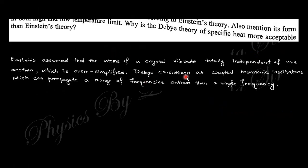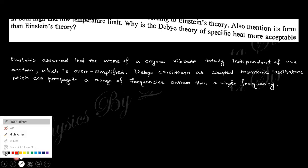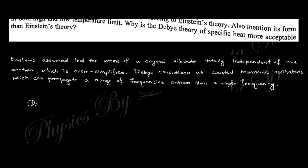Experimental and theoretical Einstein values are not matched at lower temperature but matched at higher temperature. This is not matched because the crystal vibrates totally independently of one another, which is oversimplified. Debye considered the coupled harmonic oscillator that can propagate with more than a single frequency. Another important point is that Debye takes the velocity in two dimensions: longitudinal and transverse. But Einstein takes only one side velocity, that is, the longitudinal. So there are two distinct modes.